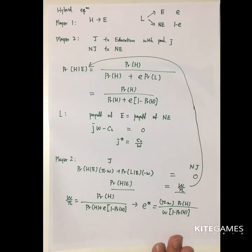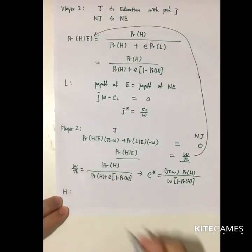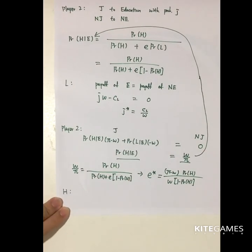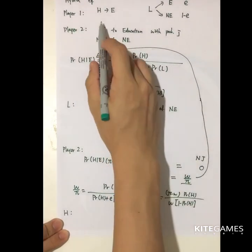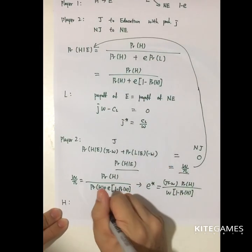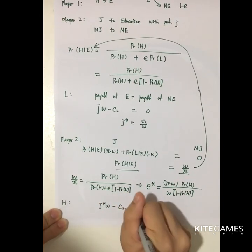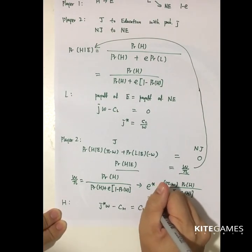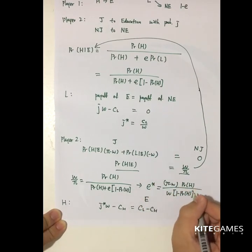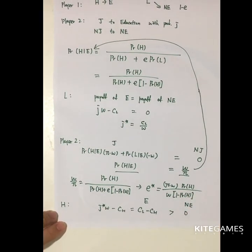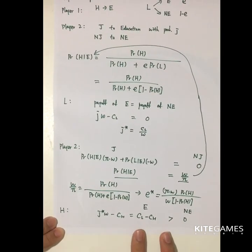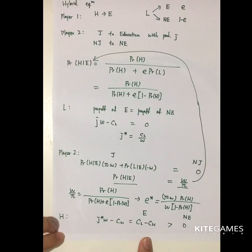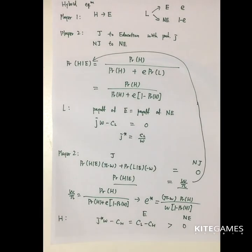Given these mixed strategies, will high quality workers deviate? No — choosing education gives J*·W − C_H = C_L − C_H, which is positive since C_L > C_H. Not choosing education yields zero because they won't be recruited. Since they get a positive payoff from education, they would not deviate. This completes the concept of the Bayesian sequential game and its three types of equilibria.